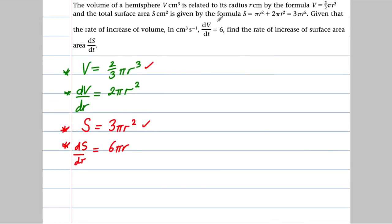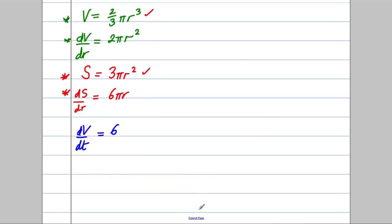We are given that the rate of increase in volume dv/dt = 6, and we are asked to find the rate of increase of the surface area ds/dt.